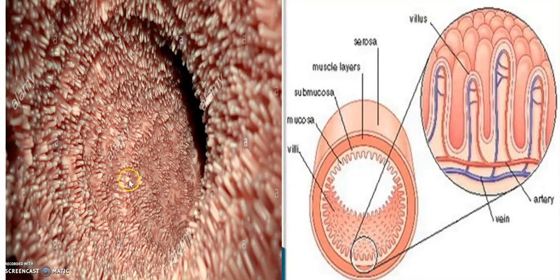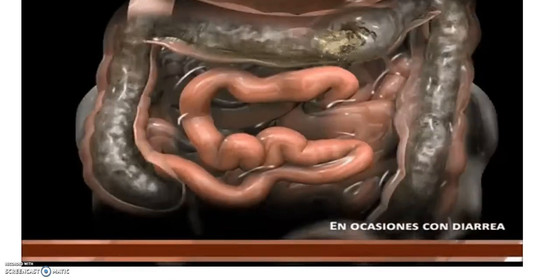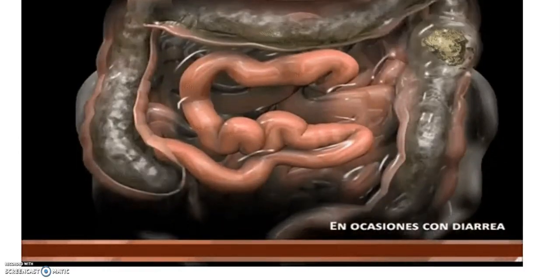This structure is actually the microscopic view of the small intestine. You can see these finger-like projections called villi. Villi are responsible for the absorption of the simpler forms of food that are formed in the small intestine.